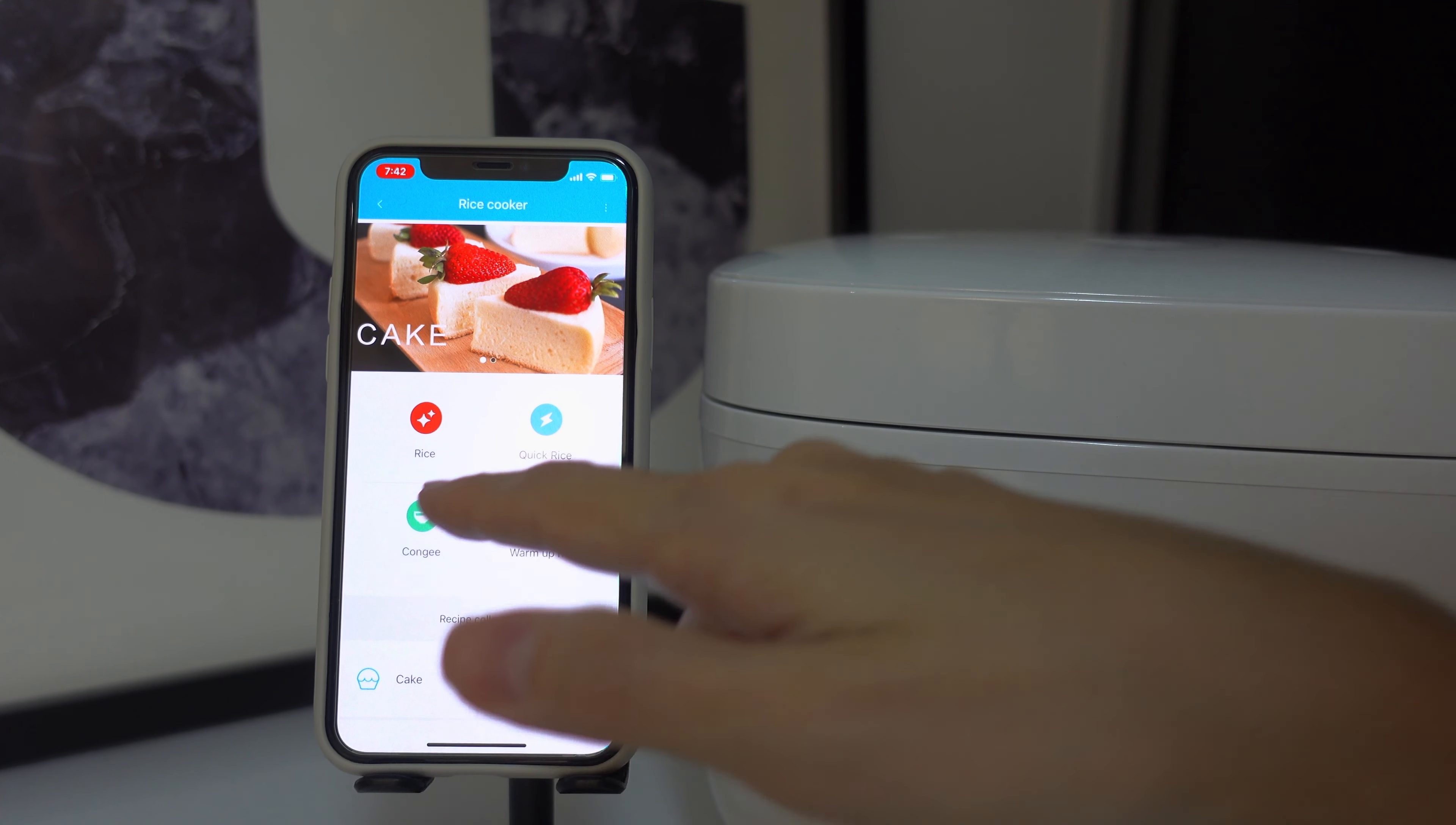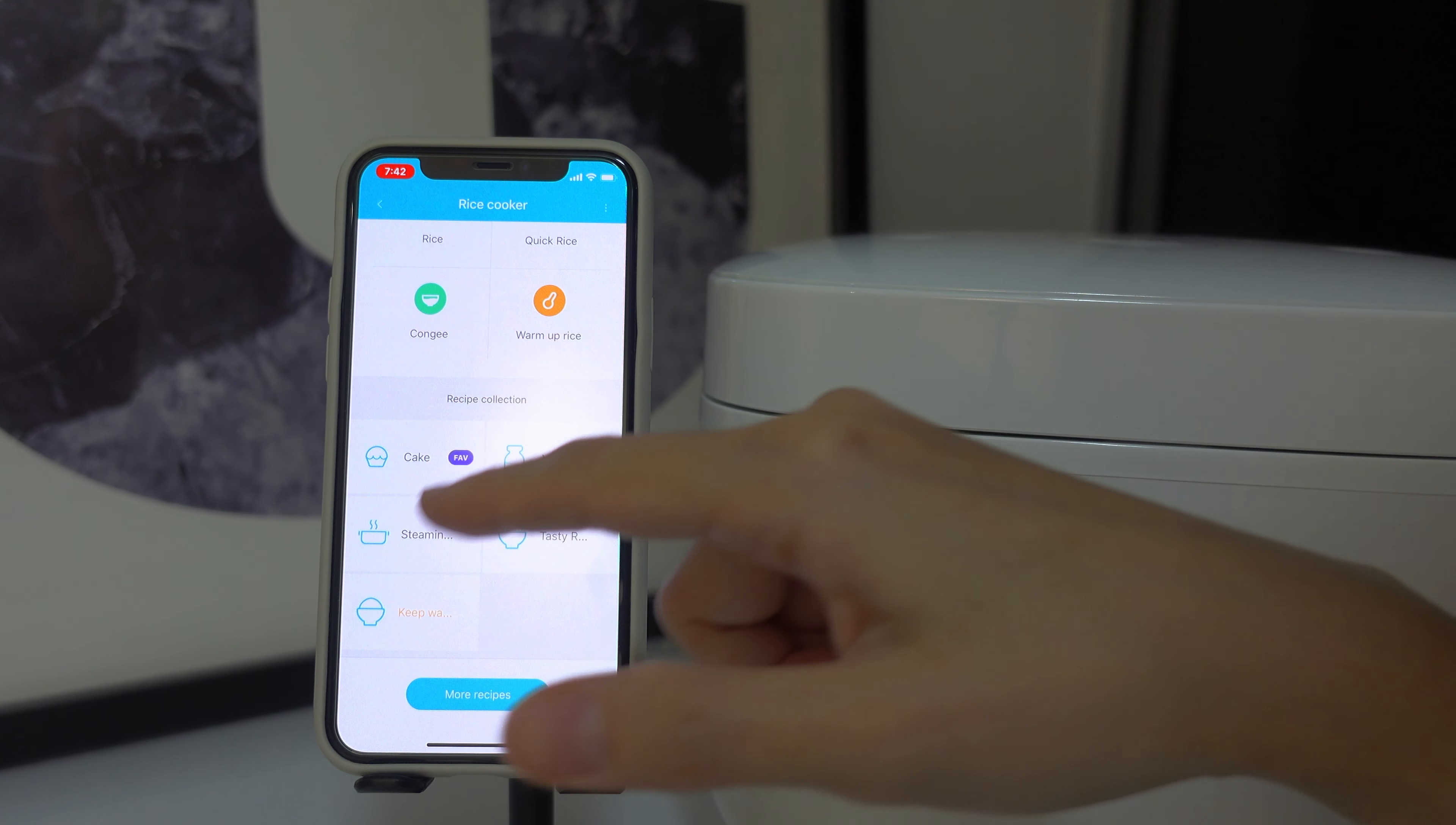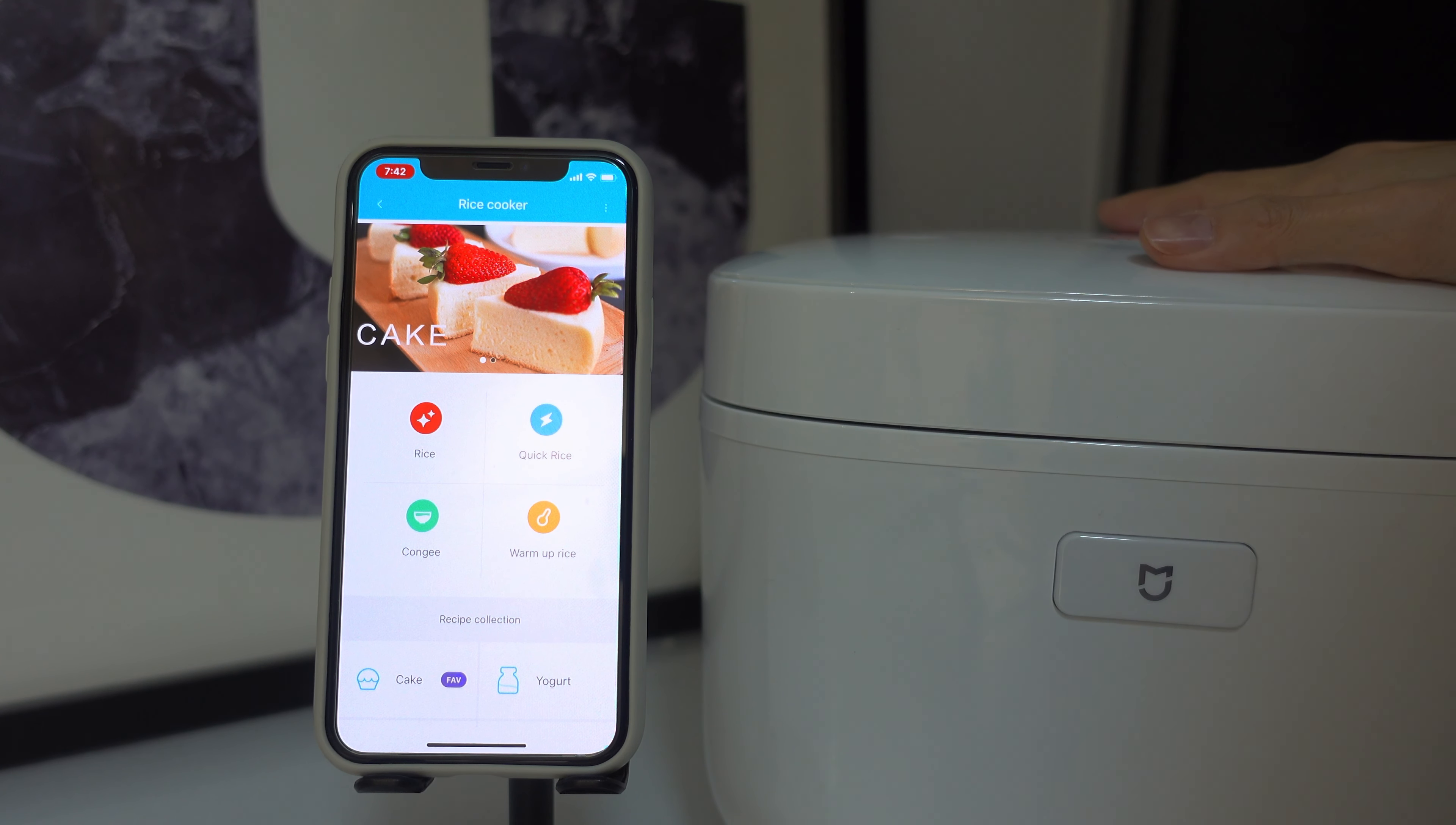They do have other options like porridge, warm up the rice, and you can make cake. I'm not sure about that because I'm not very good at all this cooking stuff, so I didn't try all this. I can only tell you about rice and quick rice. I didn't even try porridge, but the standard functions rice, quick rice, and warm up rice, so far I find it to be very reliable.